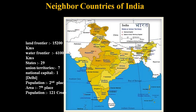Now let's identify the neighboring countries of India. The Indian land frontier — that is, the land border — is 15,200 kilometers. The water frontier is 6,100 kilometers. At present there are 28 states and 8 union territories, whereas Delhi is considered as the national capital as well as a union territory.